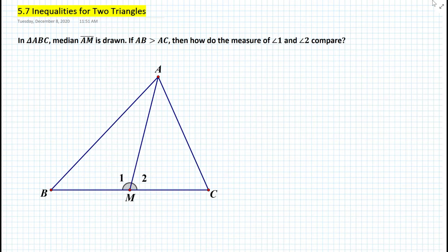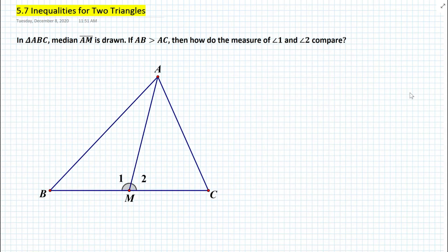In triangle ABC, median AM is drawn. If the length of segment AB is greater than the length of segment AC, then how do the measures of angle 1 and angle 2 compare? In this particular problem we're comparing angle measures not in one triangle but in two different triangles.